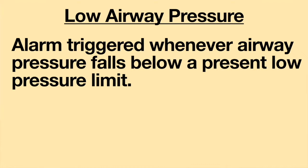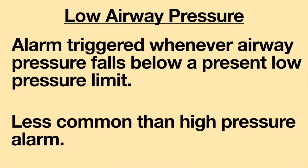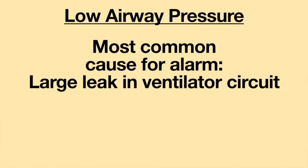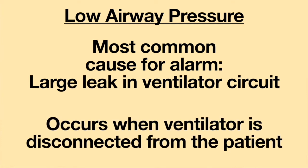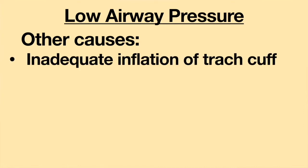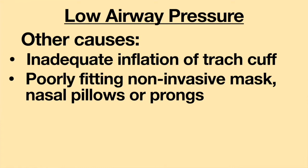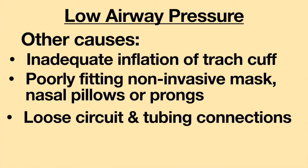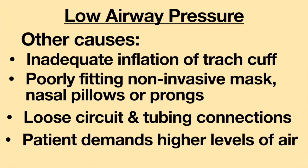A low airway pressure alarm is triggered whenever airway pressure falls below a preset low pressure limit. This is much less common than a high pressure alarm. This often occurs when there is a large leak in the ventilator circuit, most often when the ventilator circuit becomes disconnected from the endotracheal or tracheostomy tube. Other causes include inadequate inflation of the tracheostomy tube cuff, a poor-fitting non-invasive mask, nasal pillows or prongs, loose circuit and tubing connections, and the patient demanding higher levels of air than the ventilator is putting out.